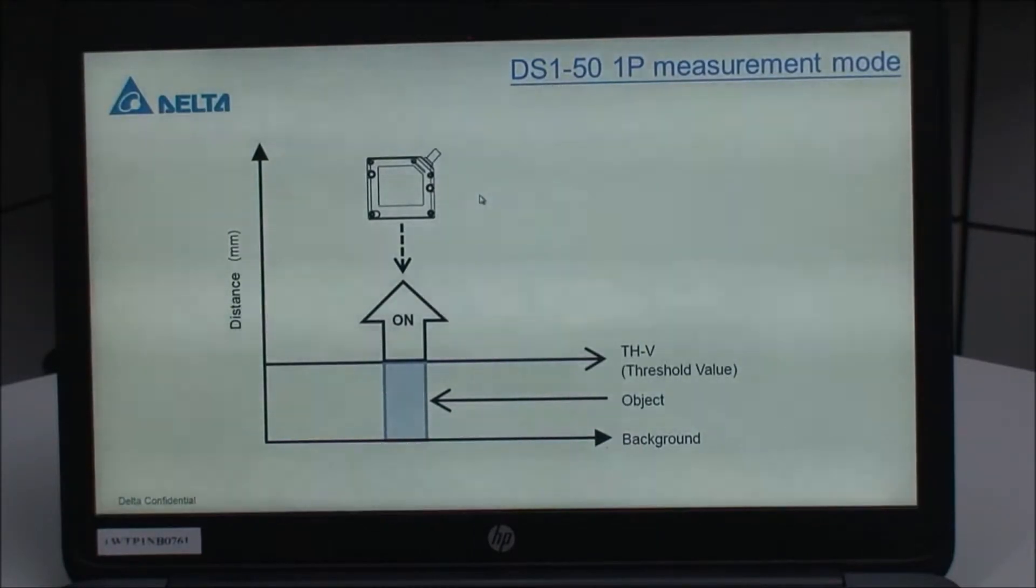If the object's thickness is smaller than the threshold value, the indicator's LED will turn off. That's the algorithm in 1P measurement mode.